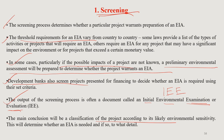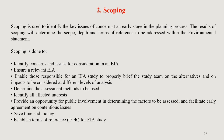That categorization — category A, B, C — which we discussed in the previous lecture with the World Bank example. Scoping is generally used to identify the key issues or concerns of a proposed project and its implementation planning processes. The results of the scoping study will determine the scope, depth, and Terms of Reference (TOR) to be addressed within the environmental statement.